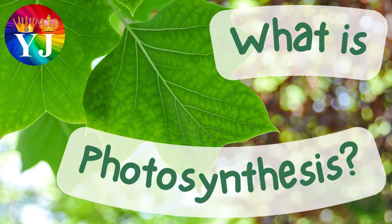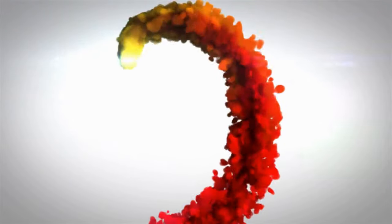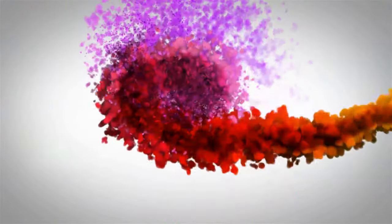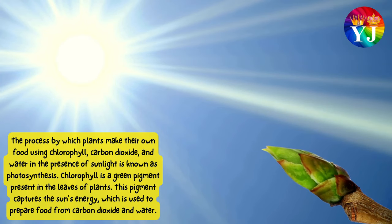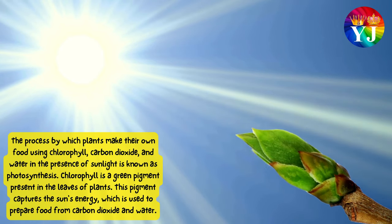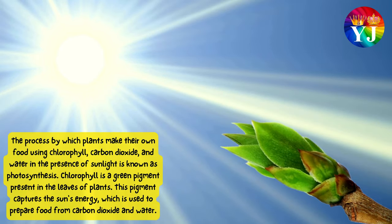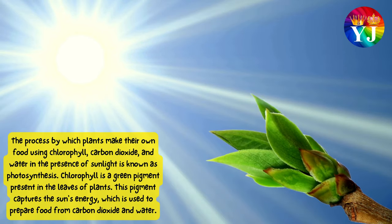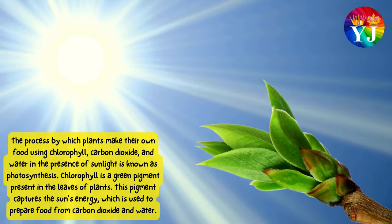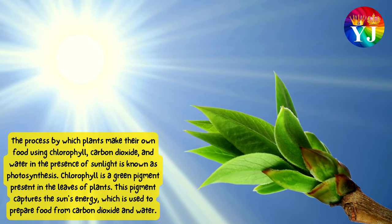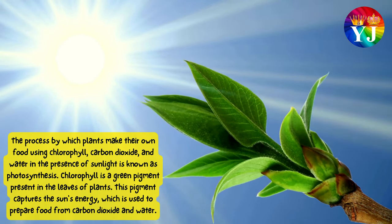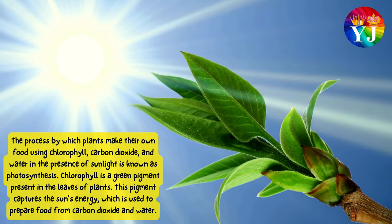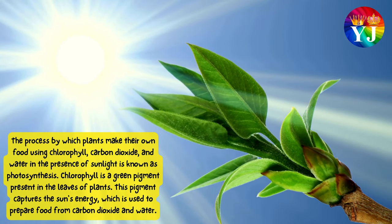What is photosynthesis? The process by which plants make their own food using chlorophyll, carbon dioxide, and water in the presence of sunlight is known as photosynthesis. Chlorophyll is a green pigment present in the leaves of plants. This pigment captures the sun's energy, which is used to prepare food from carbon dioxide and water.